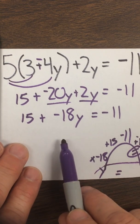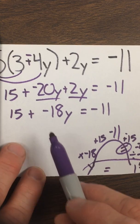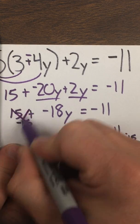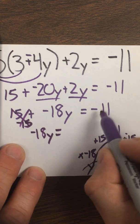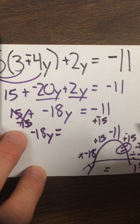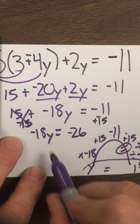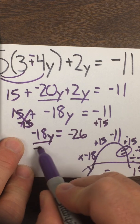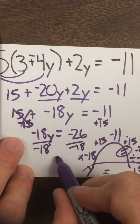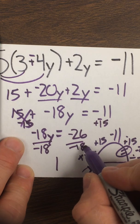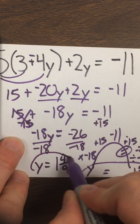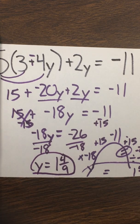If I did it with cancellation, same kind of thing. They did this, then they did this, so let me subtract 15. That cancels out, which leaves me negative 18y. And over here I'd subtract 15, which leaves me negative 26. They multiplied, so I'm going to undo it by dividing. Two negatives becomes a positive 1 and 8 eighteenths, which is the same as 1 and 4 ninths. So y equals 1 and 4 ninths.